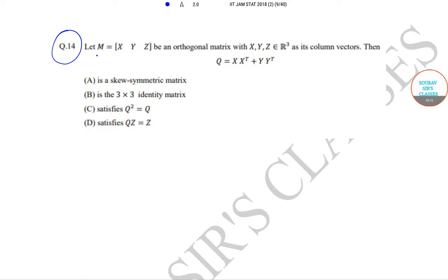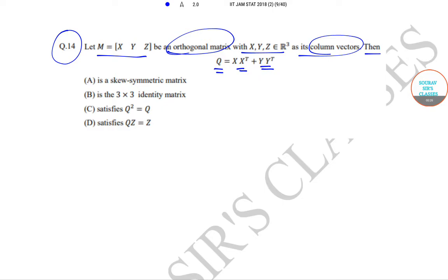It has been said that M equal to [x, y, z] is an orthogonal matrix with x, y, z belonging to R³ as its column vectors. Then Q is equal to x times x-transpose plus y times y-transpose. The options are: A) a skew symmetric matrix, B) a 3×3 identity matrix, C) satisfies Q² = Q, and D) satisfies Qz = z.